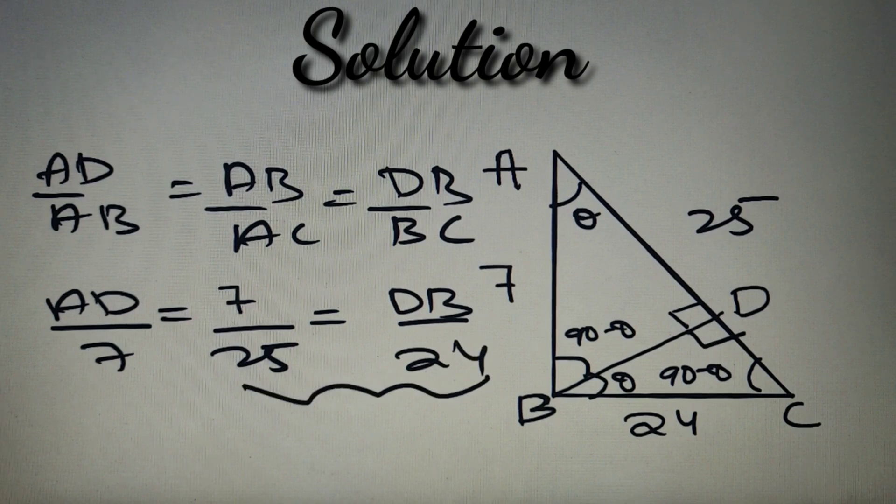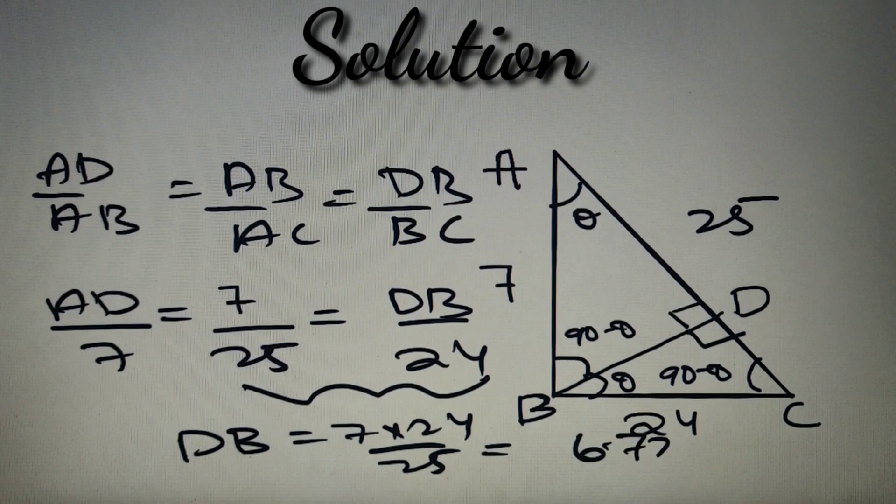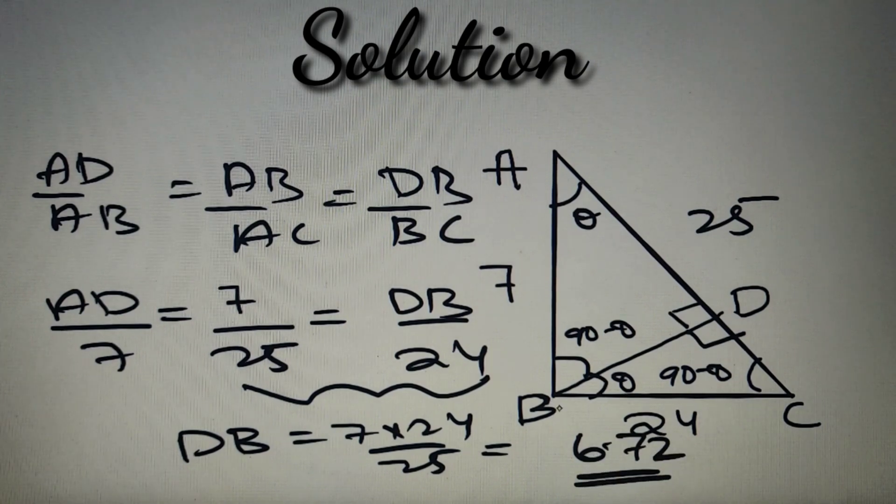If we take this ratio, then we have got the length of side DB as 7 times 24 divided by 25, and upon calculation this value will come as 6.72, which is equal to option number B.